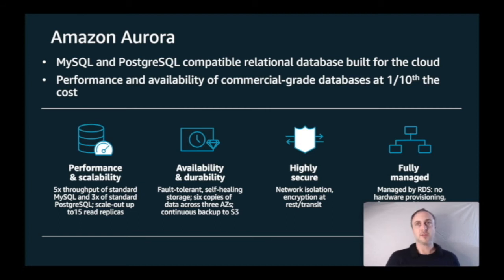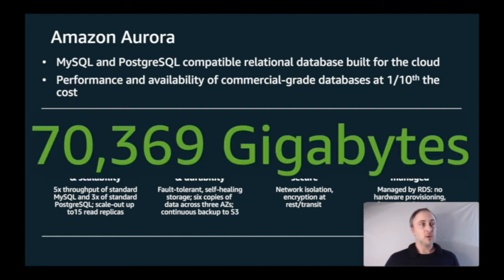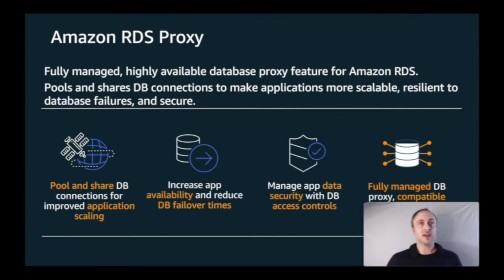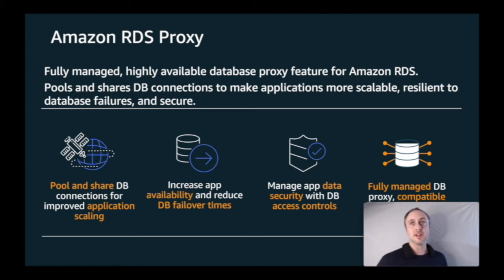Aurora provides high performance and availability for MySQL and PostgreSQL databases, with underlying storage scaling automatically up to 64 tebibytes — about 70,000 gigabytes. You can use this in conjunction with Amazon RDS Proxy, a database proxy that lets you pool and share database connections for improved application scaling.